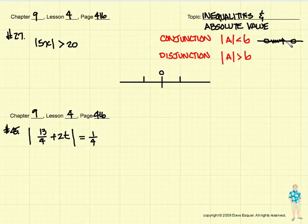So that would be the conjunction. And then the disjunction would be everything on the outside. Remember, the disjunction is sort of like outside. And the conjunction is everything inside the middle.